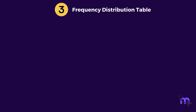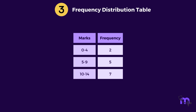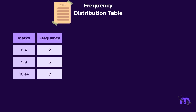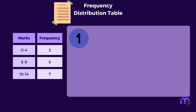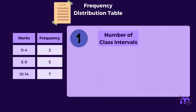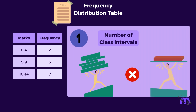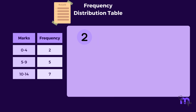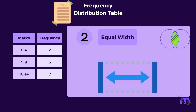A frequency distribution table is the simplest table, which has two columns. The first column lists the classes into which the data are grouped and the second column lists the frequencies for each classification. While forming the frequency table, certain additional rules are to be followed. The number of class intervals should neither be too many nor too few — preferably between 5 to 20. The class intervals should be of equal width. The class limits should be clearly defined to avoid ambiguity, for example: 0 to 4, 5 to 9, 10 to 14, etc.